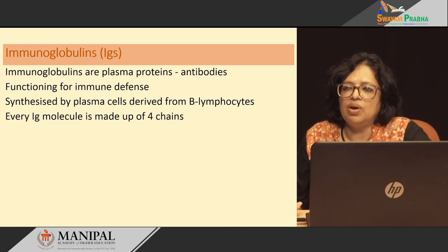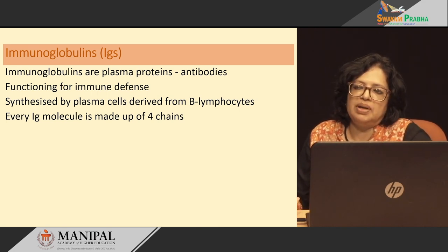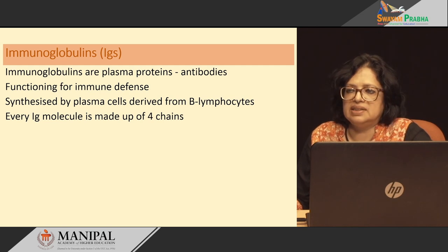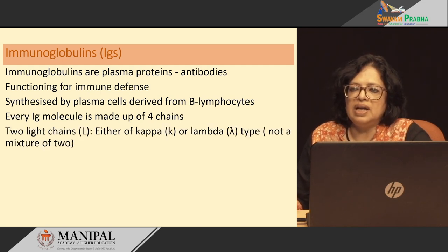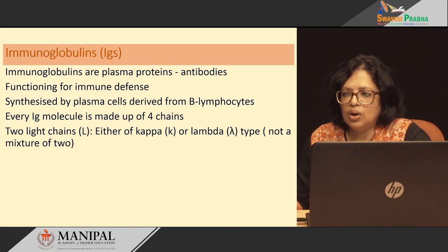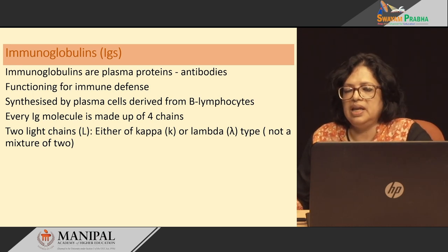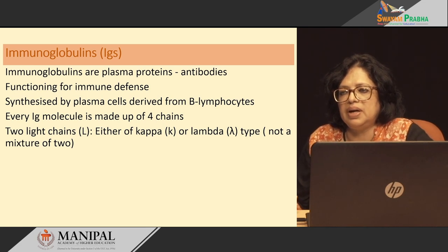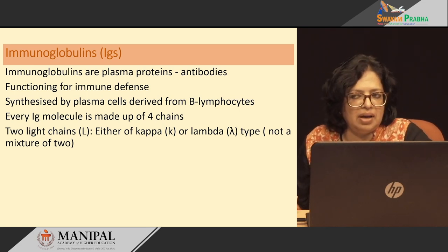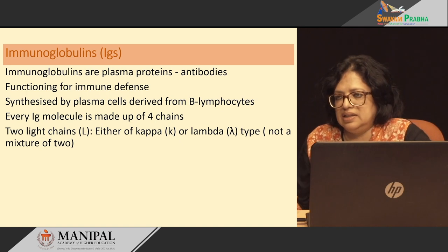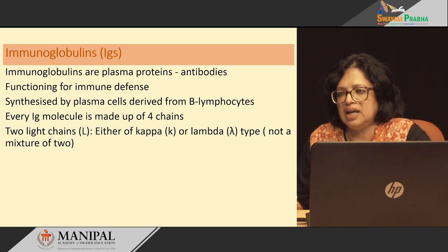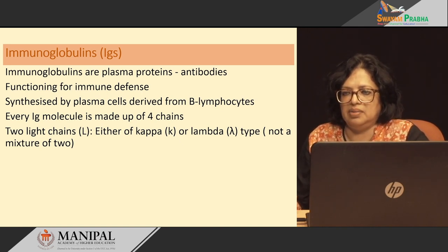Every immunoglobulin molecule is made up of 4 chains: 2 light chains, either of kappa type or lambda type, but they are never a mixture of the two. In one immunoglobulin molecule, we cannot have 1 kappa type and 1 lambda type of light chain. Both of them should be either kappa or lambda.